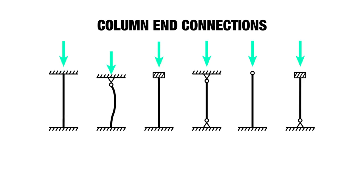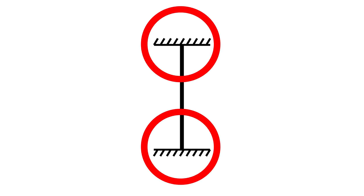So if a column is gonna buckle, we need to figure out not only the strength of the column and the length of the column, but the type of connection at the top and the bottom is gonna kind of govern its likelihood of buckling.